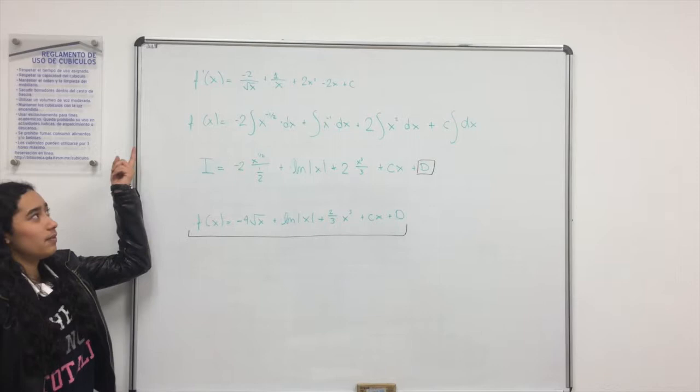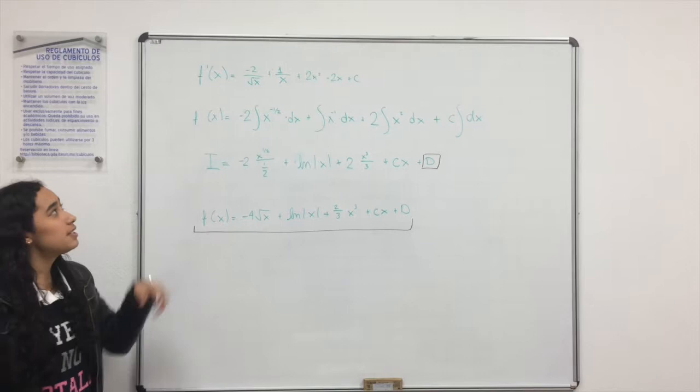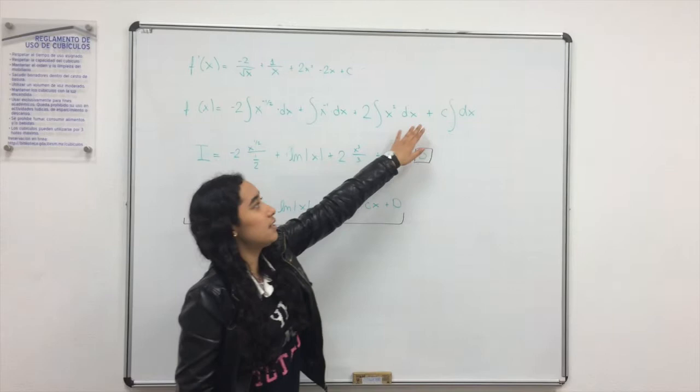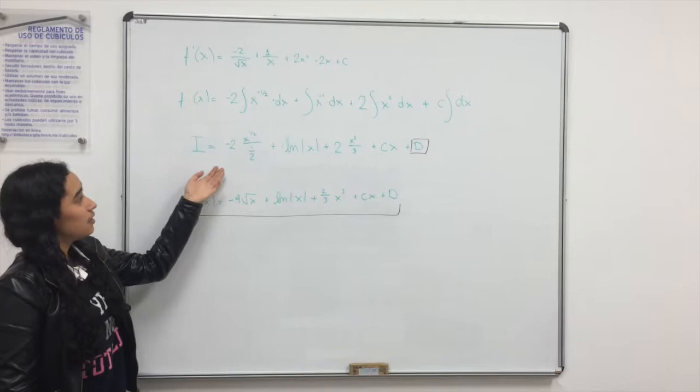So we found the derivative of f of x, that is this, and now we have to find f of x. So we integrate and we separate each term times dx, and we also need to separate c because now it is a constant, so we know that it is a number, so we write dx.